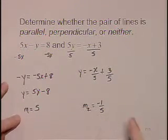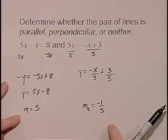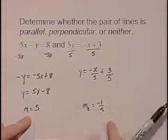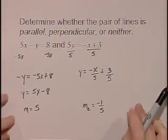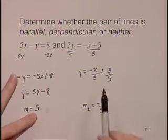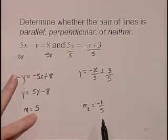We're now ready to compare. In order for lines to be parallel, they have to have the same slope, and these two lines do not have the same slope. Perpendicular lines are when the slopes are negative reciprocals of each other. So the negative reciprocal of 5 actually is indeed negative 1 fifth. So these lines are perpendicular.